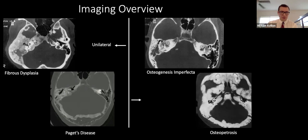An easy way to categorize these is to think of them as generally unilateral versus generally bilateral diseases. Fibrous dysplasia and Paget's disease tend to be unilateral, though exceptions exist, while osteopetrosis and osteogenesis imperfecta are more often bilateral.